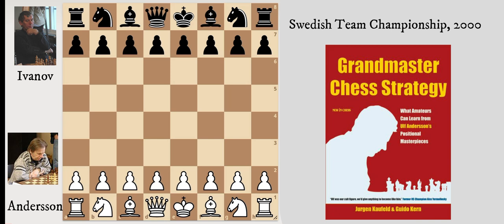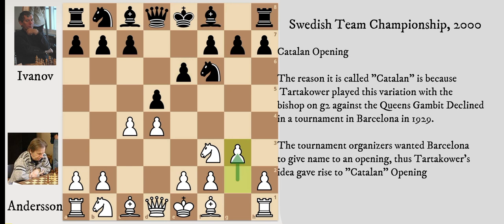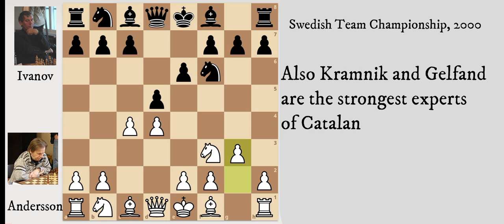Now I will have a look at some of his games that involve the Catalan opening with white. This opening is characterized by putting the bishop on the long diagonal to have a long-lasting pressure on the queenside. The Catalan is a special opening because it favors technical players that love to go into endgames and hold long-lasting pressure on black.